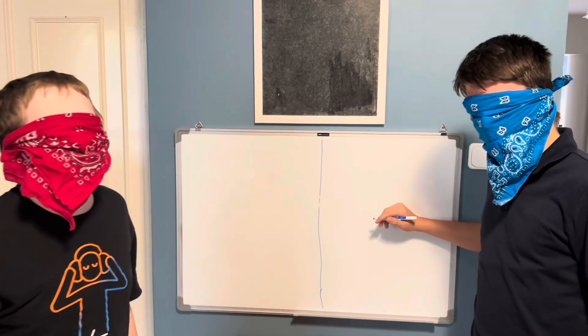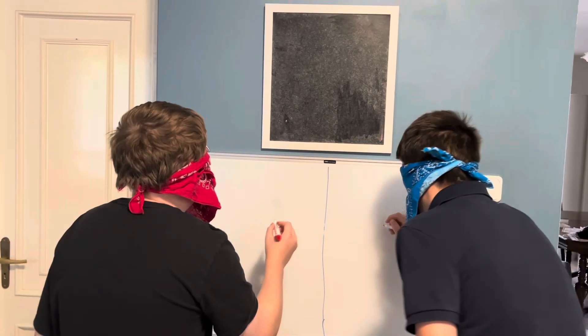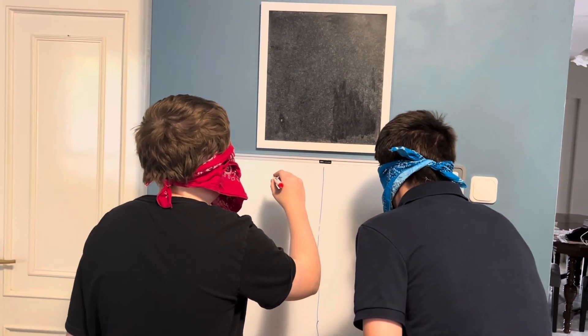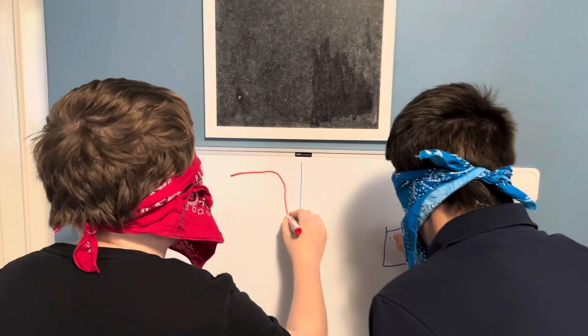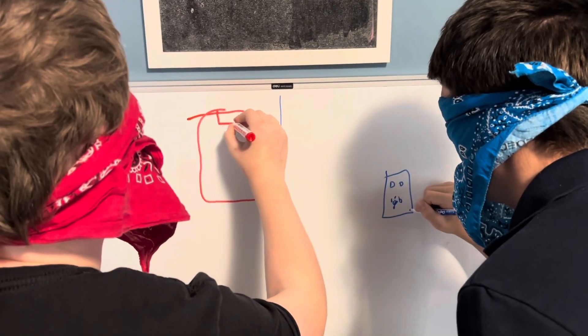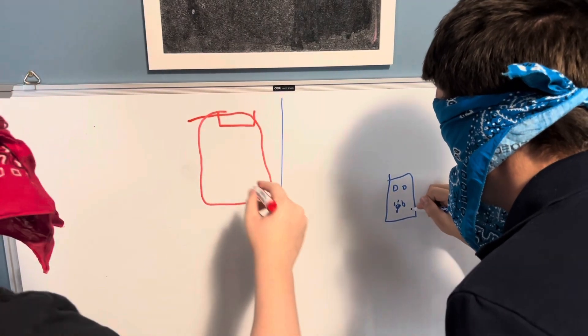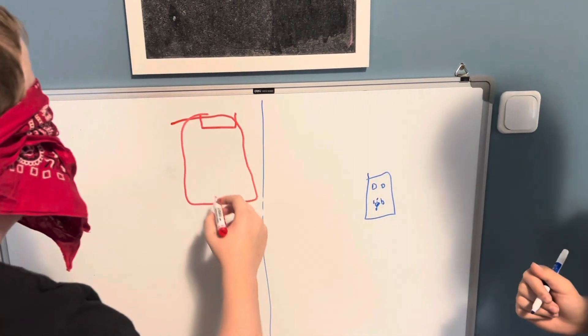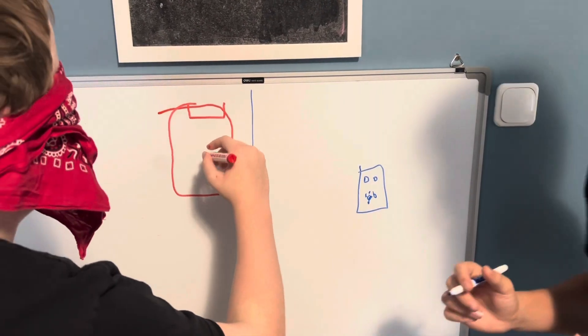All right. Round number four is a smartphone. Three, two, one. Begin. I feel like he's writing on my side of the board. I'm done, I think.